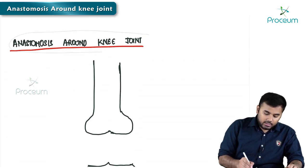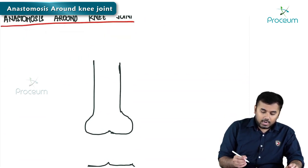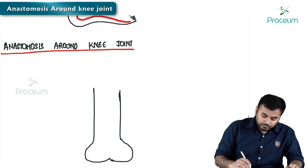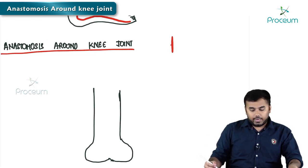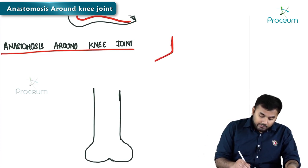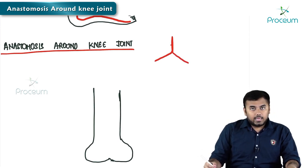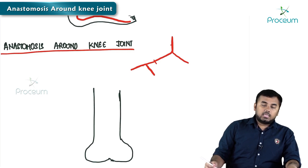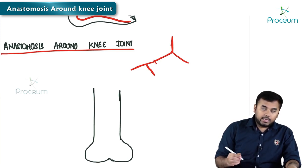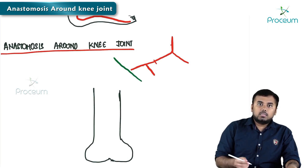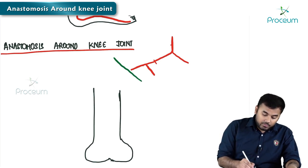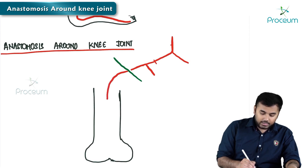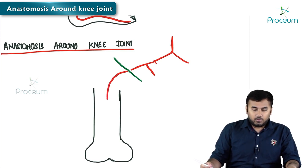Very important thing you need to know: we have got a vessel called the abdominal aorta, and this abdominal aorta divides into two branches called the two common iliacs. The two common iliacs divide into right iliac and left iliac. This right iliac crosses the inguinal ligament and enters inside to form the femoral artery.